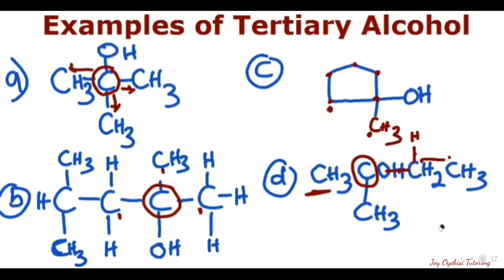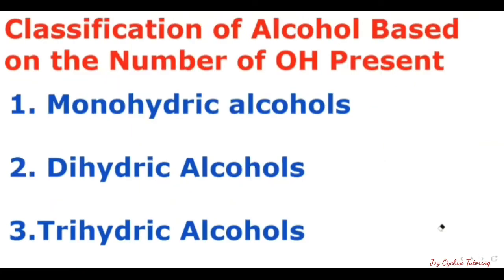Now let's go to the next classification: classification of alcohol based on the number of OH groups present. The first type is monohydric alcohol — those that have just one OH group present. Dihydric alcohols contain two OH groups, and trihydric alcohols — tri means three — have three different OH groups present.